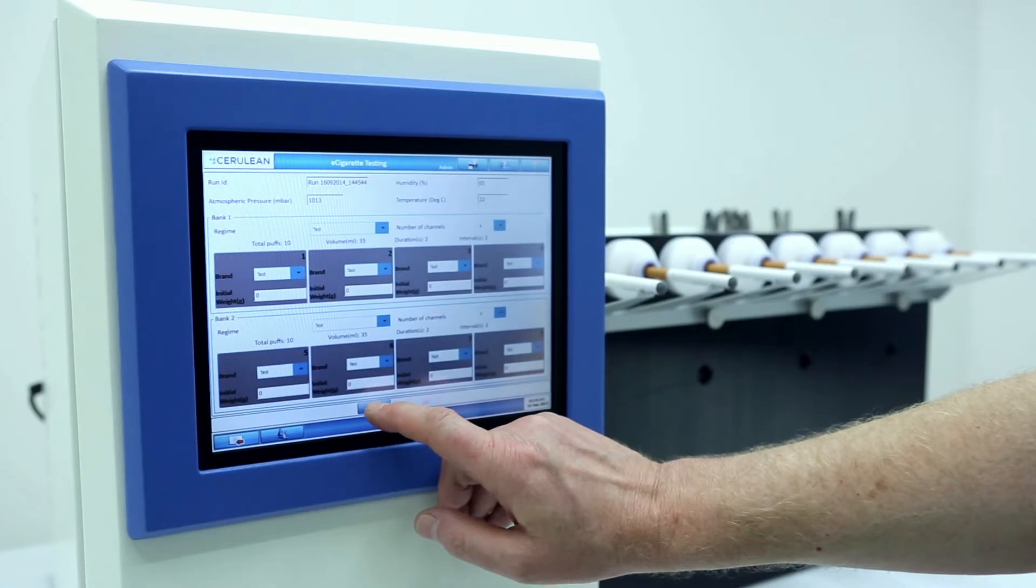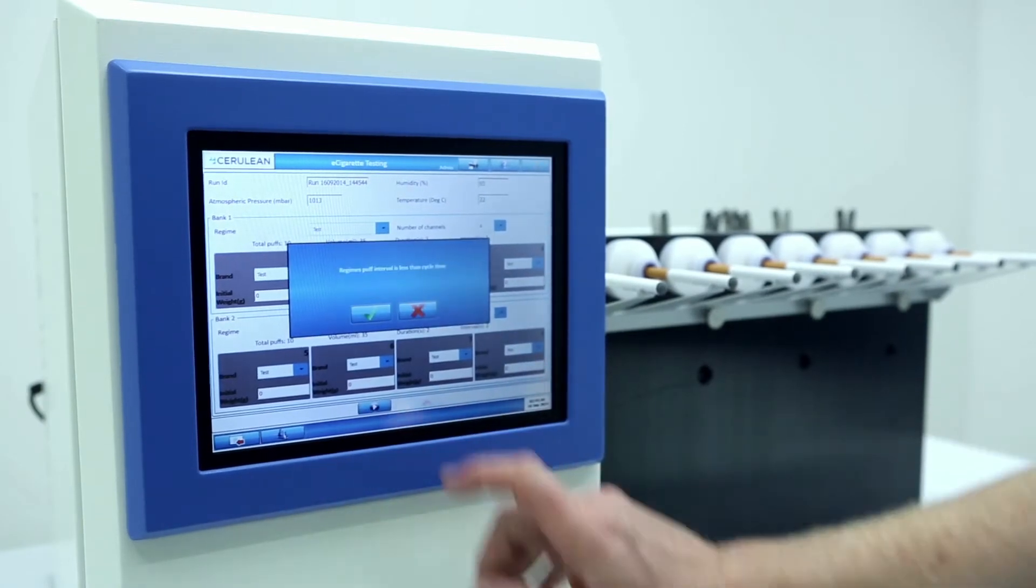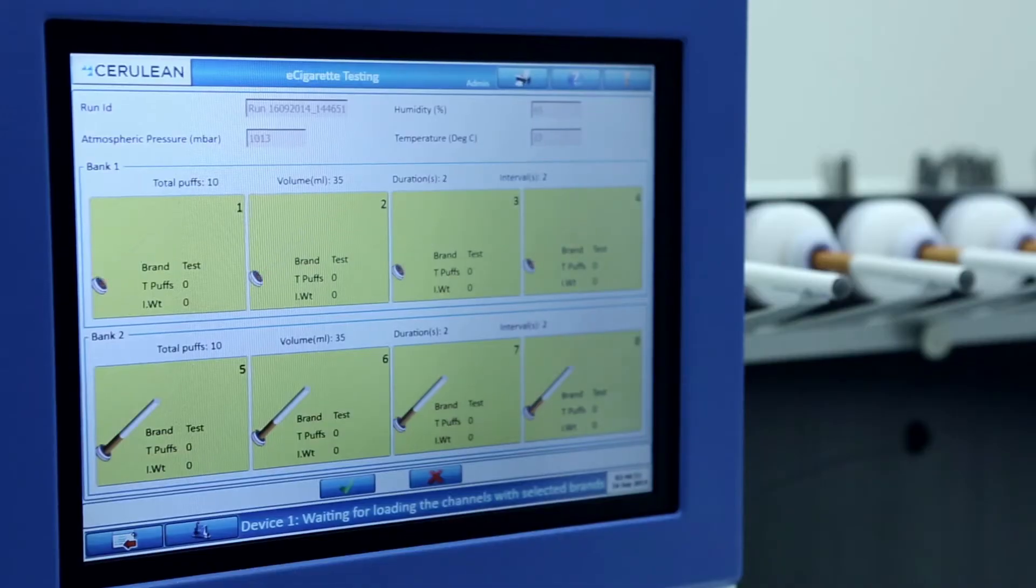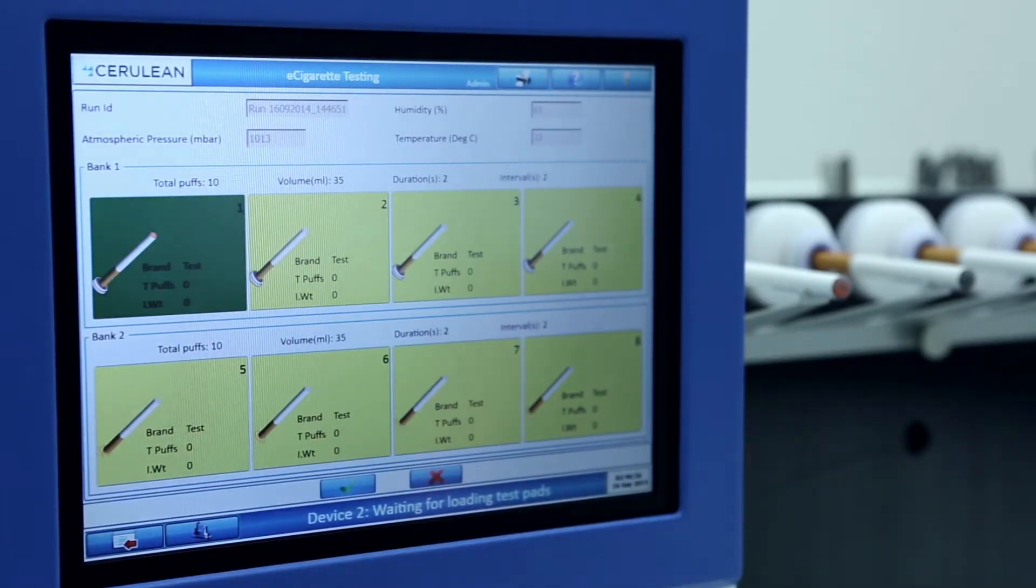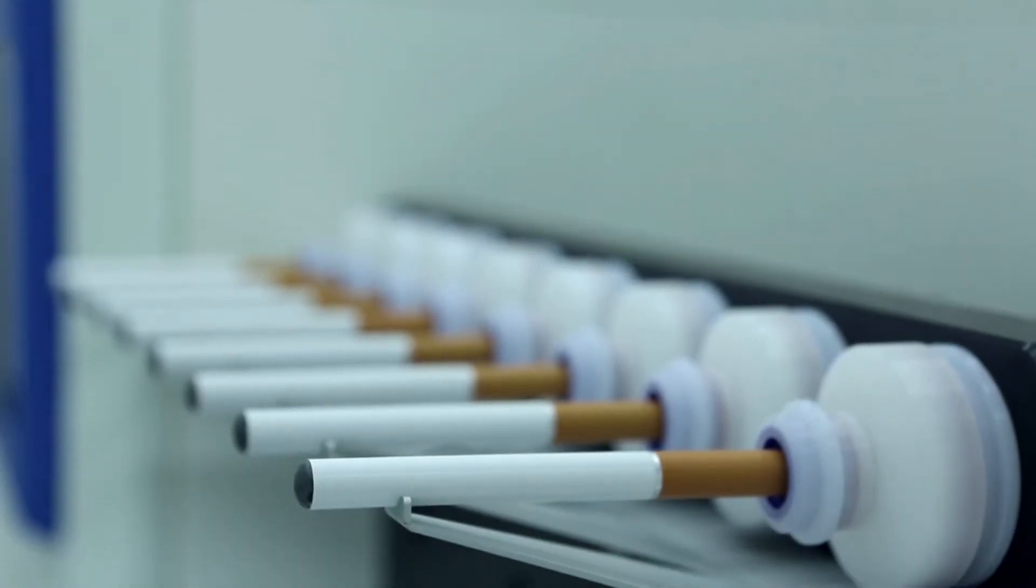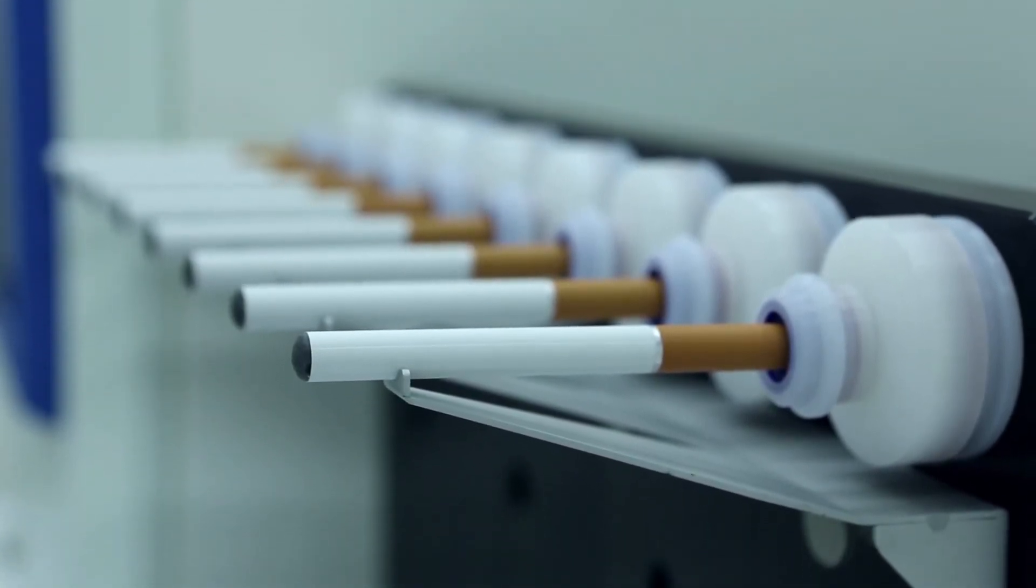The CETI-8 is controlled via the intuitive touchscreen user interface. Using the interface, the user can select different puff profile shapes with the choice of the ISO sine wave or the square wave, which is Coresta's recommended waveform.